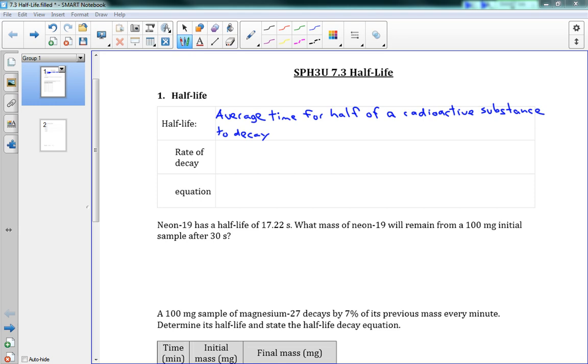And another 10 days, down to 62.5. You get the idea. You keep on dividing by 2 each time. And so you can imagine, then, there's no way to actually get rid of all of it. It's going to keep on dividing into 2 and 2 and 2 forever. So that's how the half-life works.